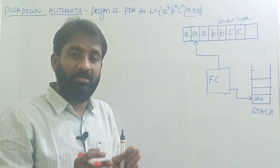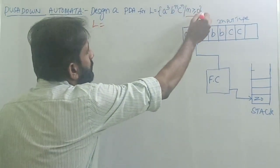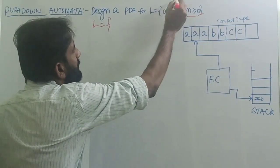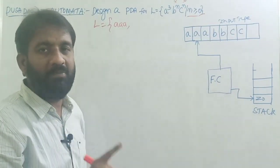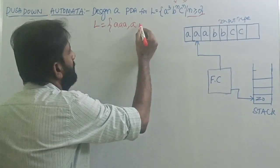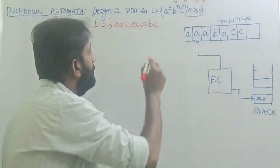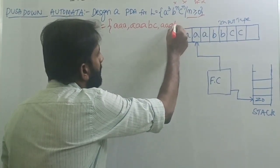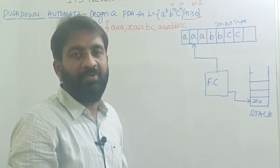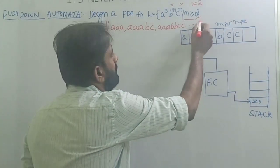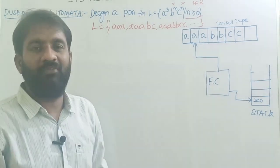We have to first figure out what strings are formed over this language. If N equals 0, there are no B's and no C's — only three A's. If N equals 1, the string is triple A, single B, single C. If N equals 2, the string is triple A, double B, double C. If N equals 3, the string is triple A, triple B, triple C, and so on.